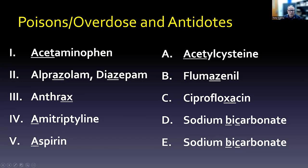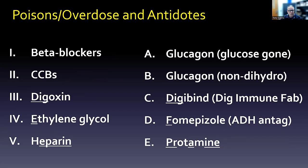Once you get these first five down, you can move on to the next ones. We're going to use a couple of different letters to move along — B, C, D, E, H. It didn't quite work out the way I wanted, but we're just trying to get some kind of order so that when we look at the antidotes, it works out.